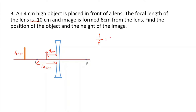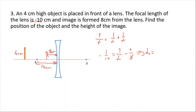Using the formula 1/f = 1/d_object + 1/d_image, and since this is a diverging lens: -1/10 = 1/d_object + (-1/8). The image distance is negative because it is a virtual image on the same side as the object. For diverging lenses, the image is always virtual and the image distance is always negative. After calculations, the object distance equals 40 centimeters.